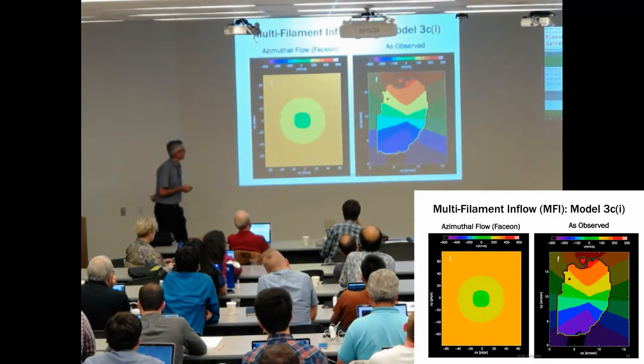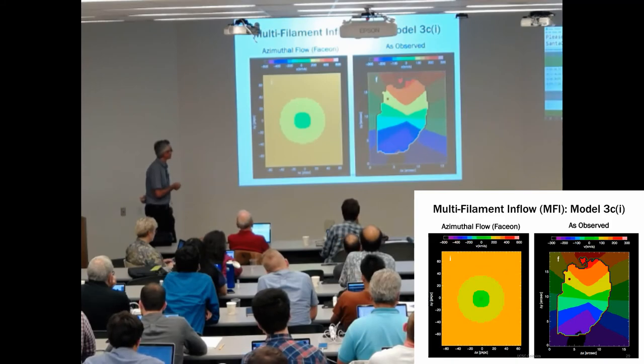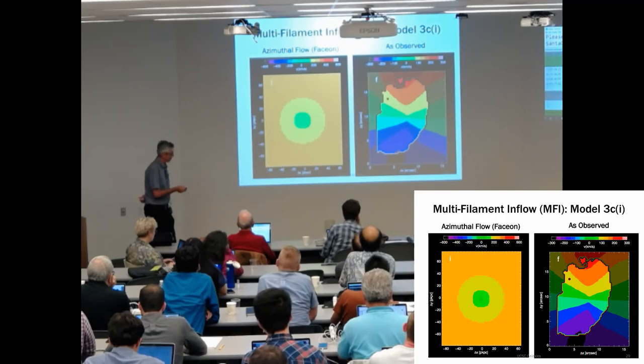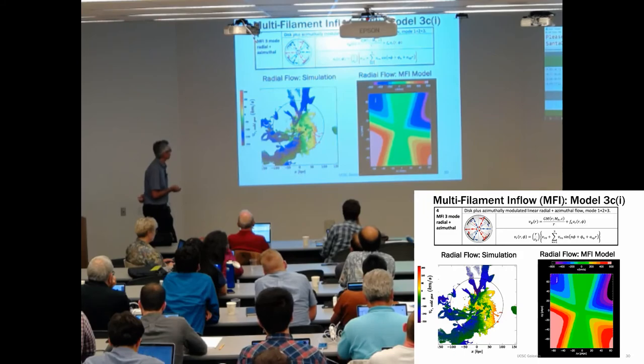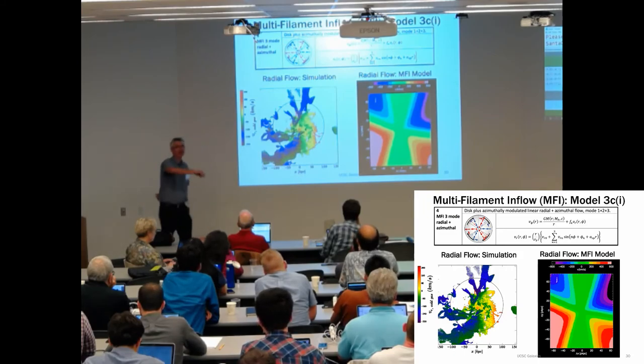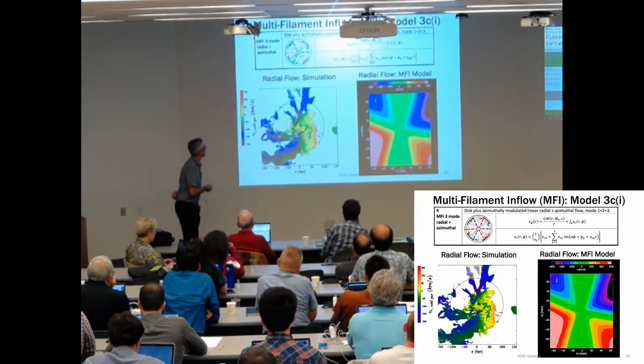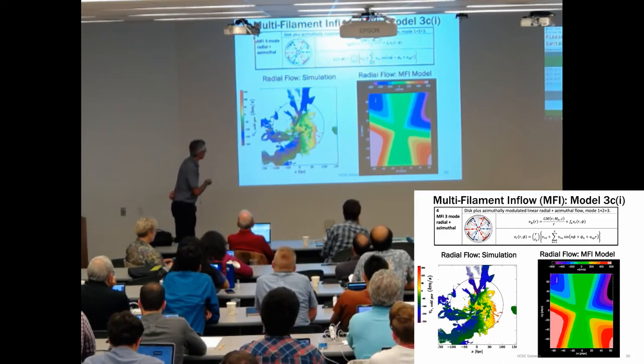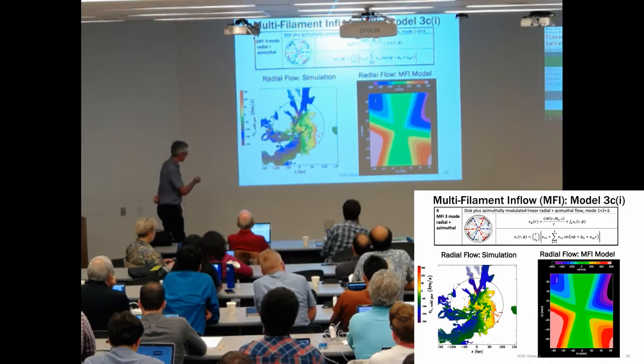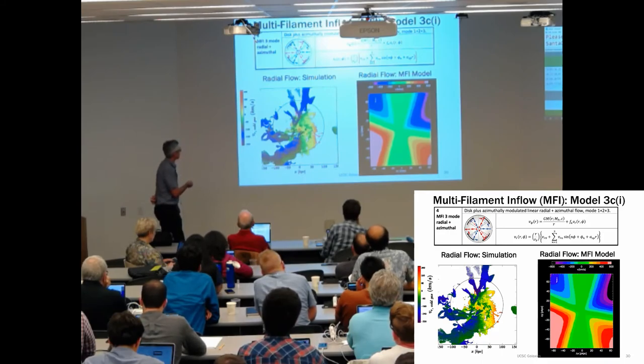And we're going to combine rotation. This is rotation in the face-on plane. This is rotation in an edge-on view. Velocity map. What do we do with this radial inflow? Well, it's not azimuthally constant. It's also linearly varying roughly with radius. It's smaller inside than it is outside.